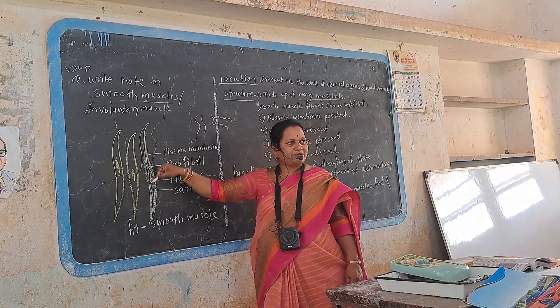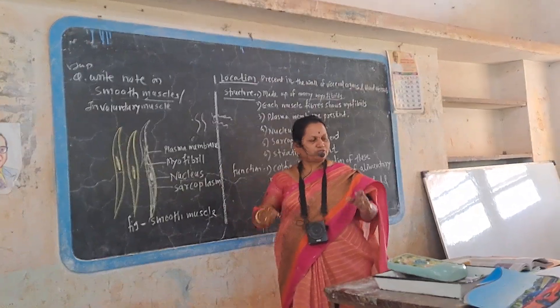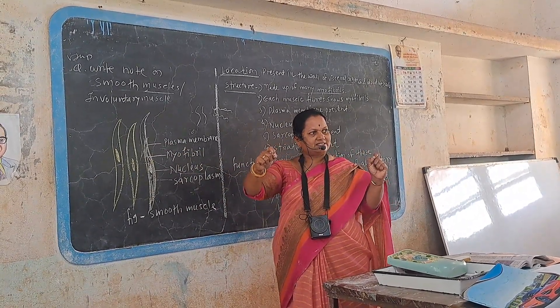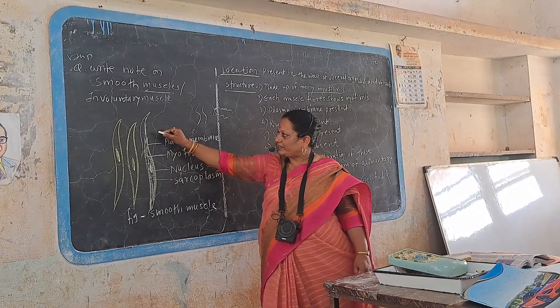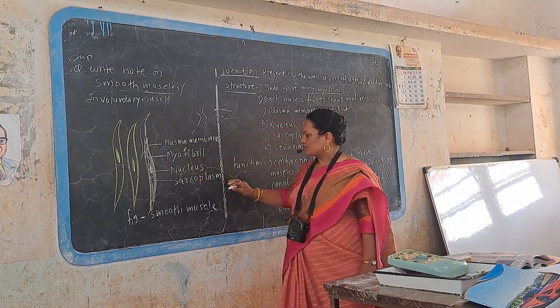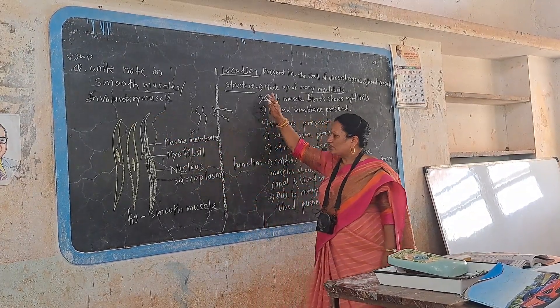The shape of the smooth muscle cell is spindle shaped, with both ends tapering to a fine tip.